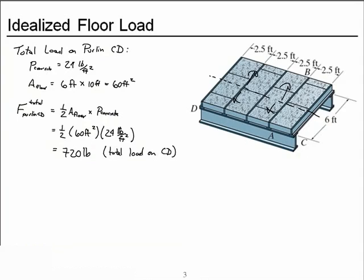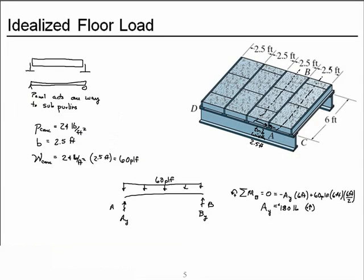We combined that with the total area of the floor, assumed that half the floor load would go to each of the purlins, and so we expect 720 pounds total load applied onto member CD. We then looked at how much of the floor panel weight went to each sub-purlin, for example member AB. We found that it's a one-way action and therefore we looked at the tributary width coming to sub-purlin AB as being constant, which means that our distributed load on member AB is uniform.